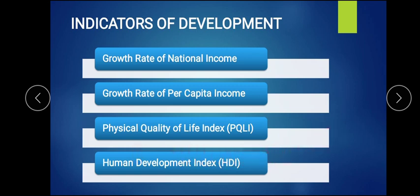Human Development Index considers many various points, but the three main ones are: first, standard of living; second, knowledge — that is education; and third, life expectancy — how many years a person lives in a particular country. These three points make up human development, and this indicator shows the parameters for different countries. We will learn all these things under the four indicators.